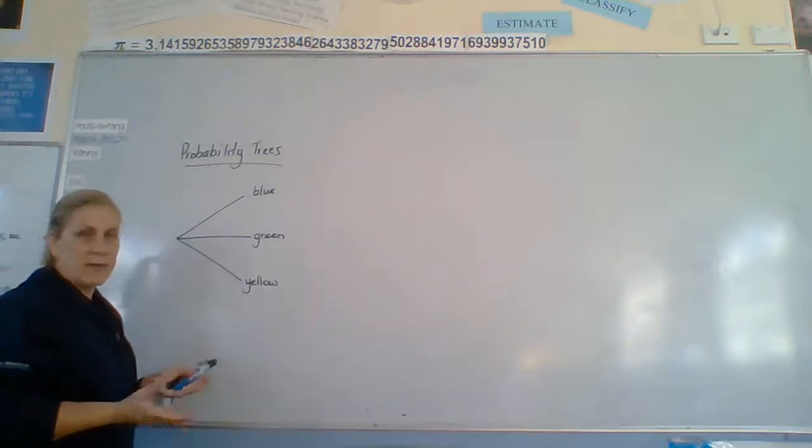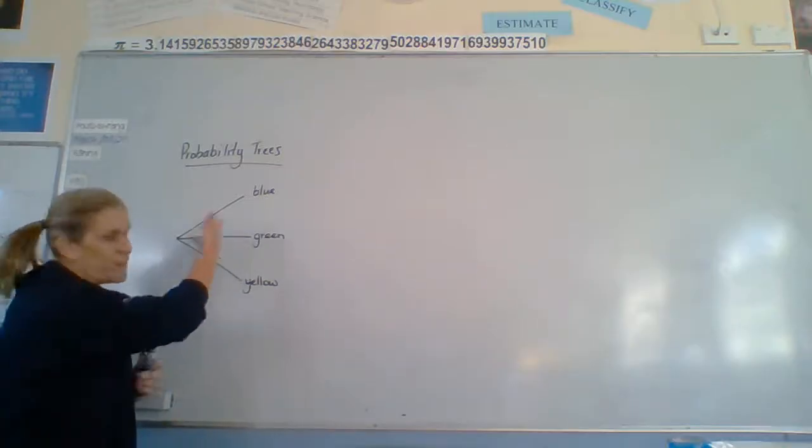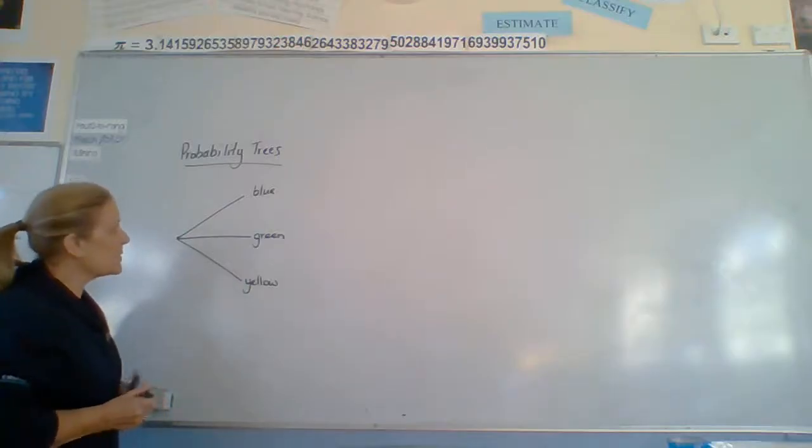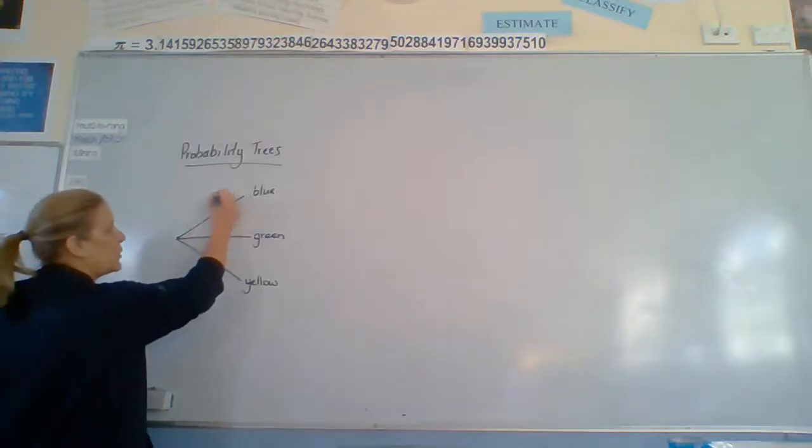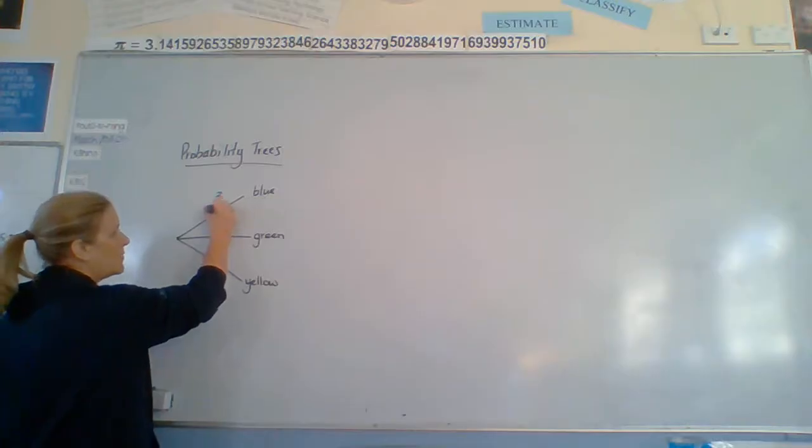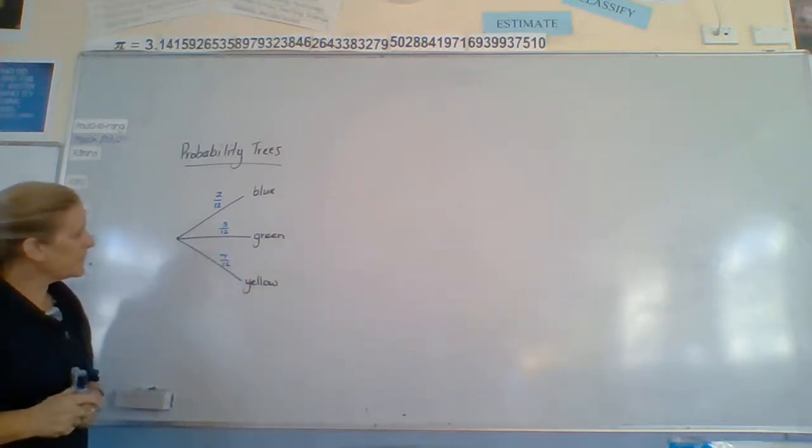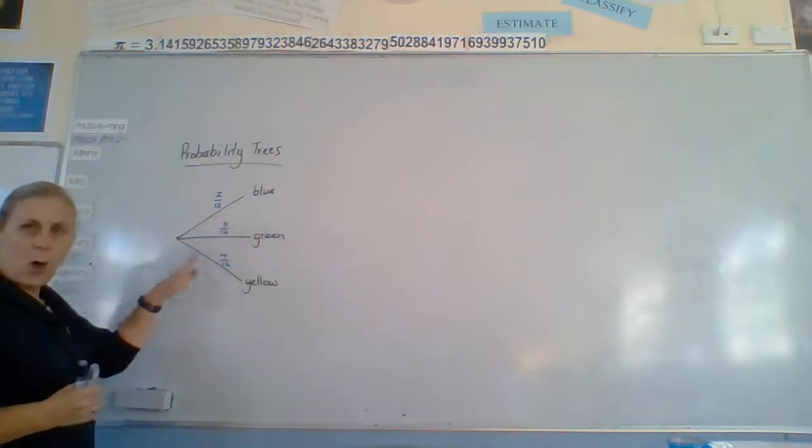So, what we need to know is how many there are all together. What we're going to say is that there are 2 out of 12, 3 out of 12, and 7 out of 12. The probabilities go on the branches.